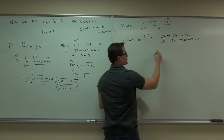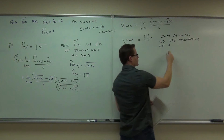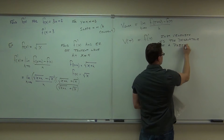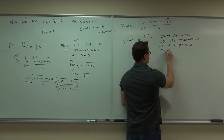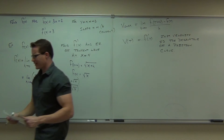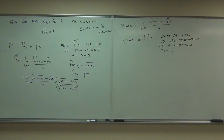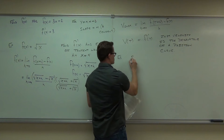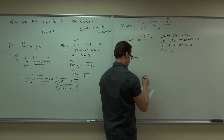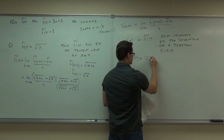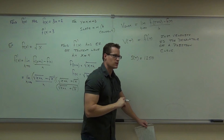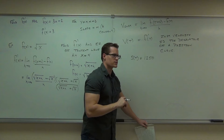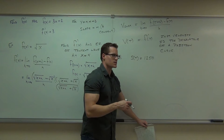Instantaneous velocity is the derivative of a position curve. Let's do one example just to flush it out a little bit. Do you know anything that's 1,250 feet tall? Actually, that's 5,000 feet tall. Empire State Building, maybe? Sure, let's say that. I think 110 stories — that's about right.